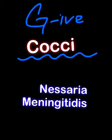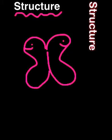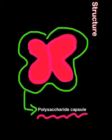The first organism is Neisseria meningitidis. We will start with its structure. This is a kidney-shaped diplococci. We will build up our organism from the outside towards the inside.